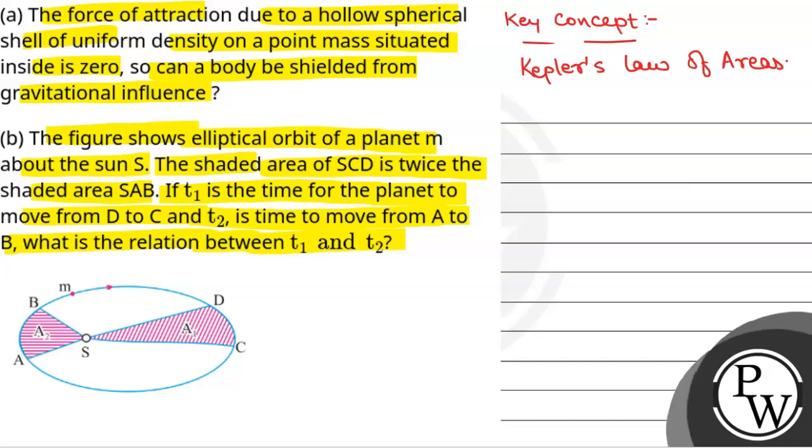Now we will see, the force of attraction due to a hollow spherical shell of uniform density on a point mass situated inside is zero. But can the body be shielded from gravitational influence?